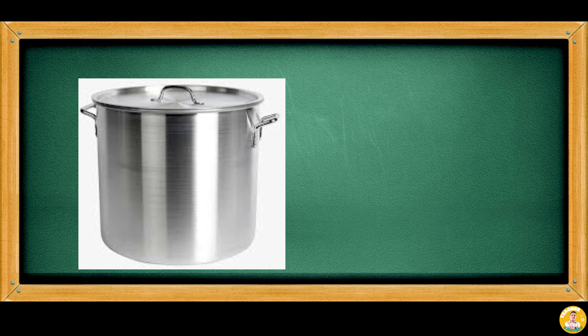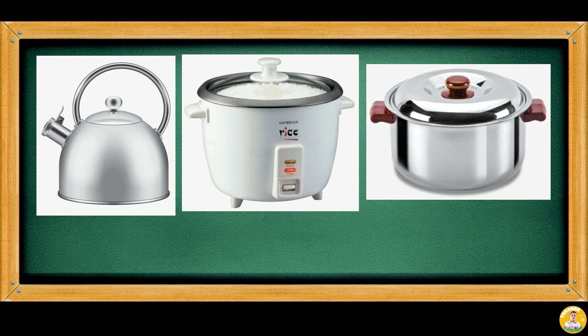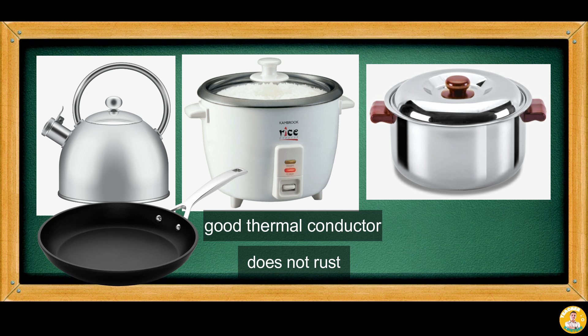You make cooked rice in an aluminum pot or in a rice cooker. Aluminum is used in making cookware like kettles, rice cookers, casseroles, and frying pans because it is a good thermal conductor, does not rust, and has light weight. These properties are important for everyday use in cooking foods.